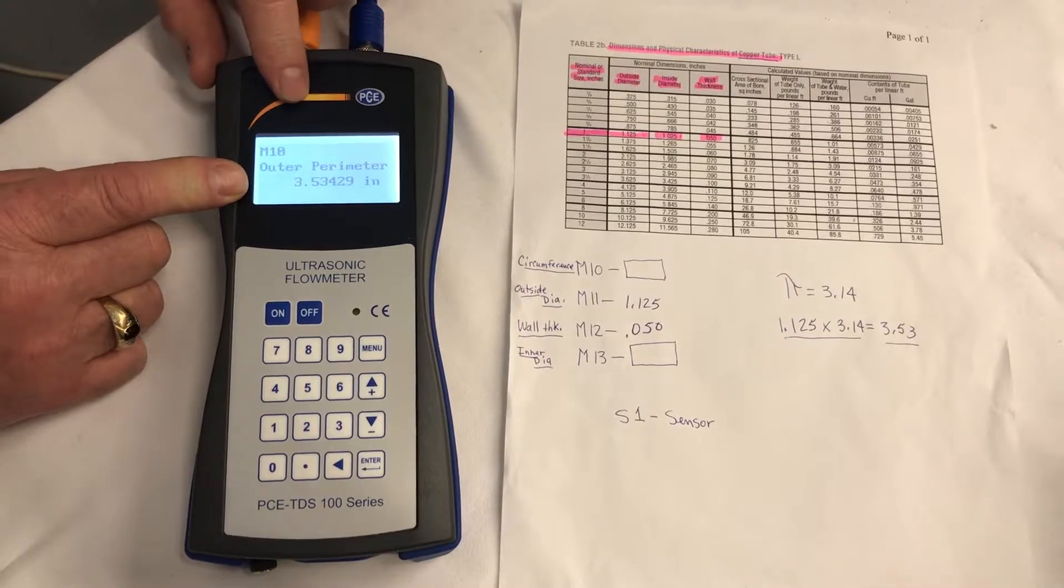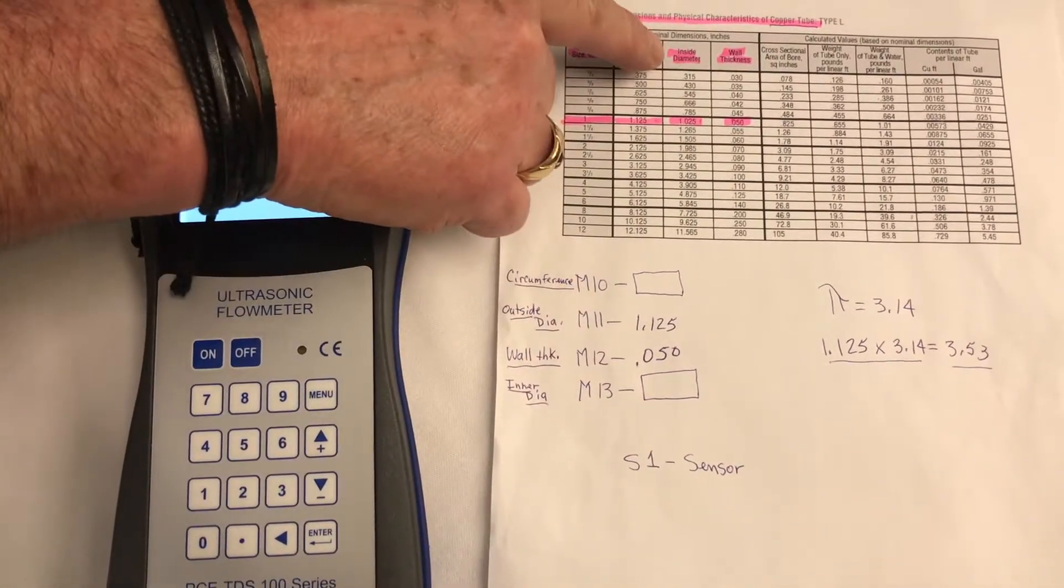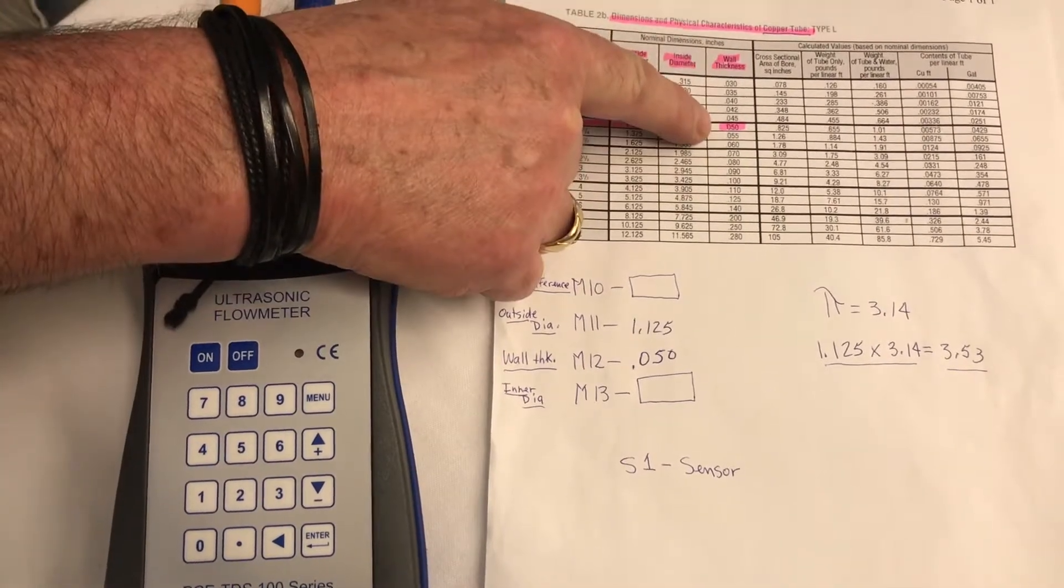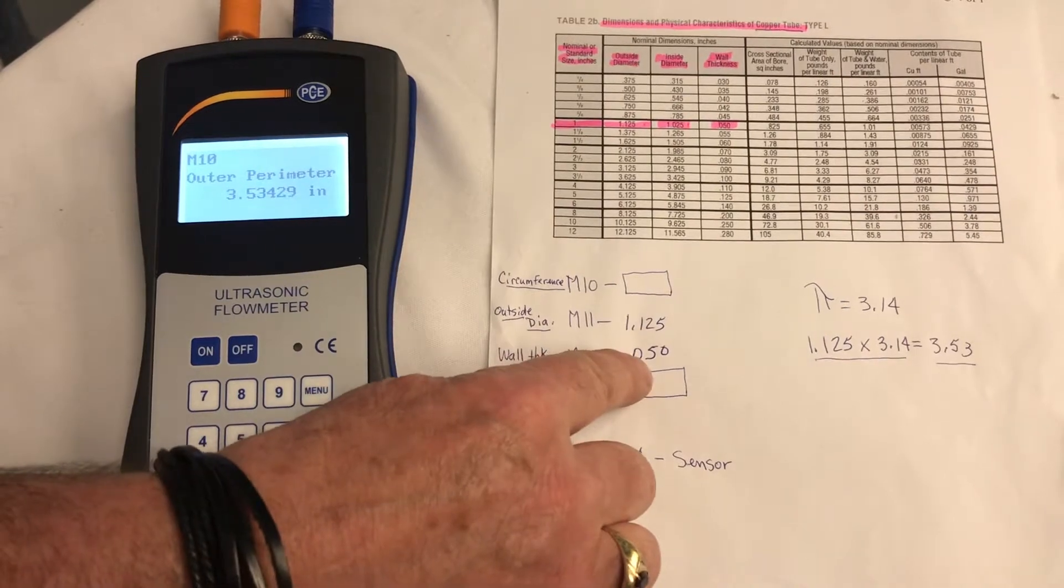Next, we're going to enter the wall thickness, which is on our chart, which is wall thickness right here, .050. That goes under ILM-12, .050.